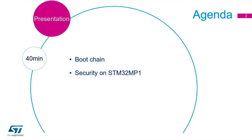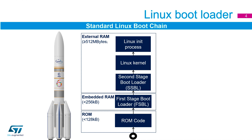First we're going to look at the boot chain — we can consider it like a rocket. We have our ROM code, which is hard-coded inside the device at 128k. That will then load our first stage bootloader, which sits in embedded RAM at 256k. That then loads our second stage bootloader, kernel, and processes, which sit in the external DDR memory on board the device.